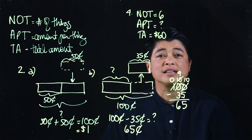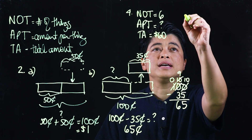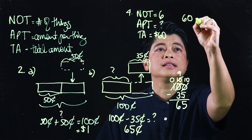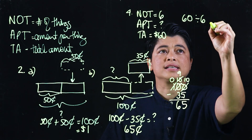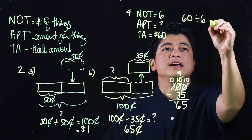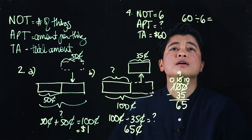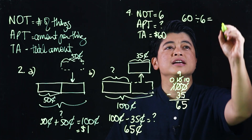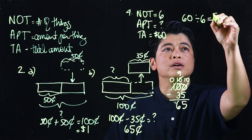Since we know the total and need the amount per thing, this is a division problem: 60 divided by 6 equals 10 dollars per ticket.